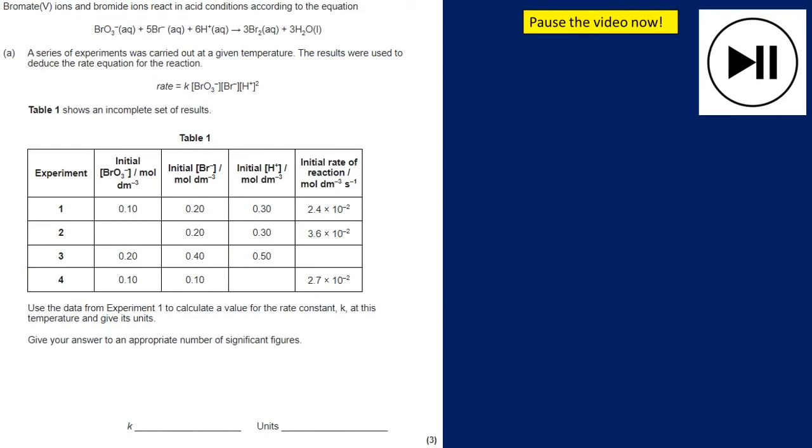Let's take a look at this exam question. I'm going to suggest you pause the video, have a go at it yourself, and then unpause to hear the answer. We've been given the rate equation here, so we just need to rearrange it to get k equals. I'm going to get k equals the rate divided by concentration of BrO3 minus, multiplied by the concentration of Br minus, multiplied by the concentration of H plus squared.